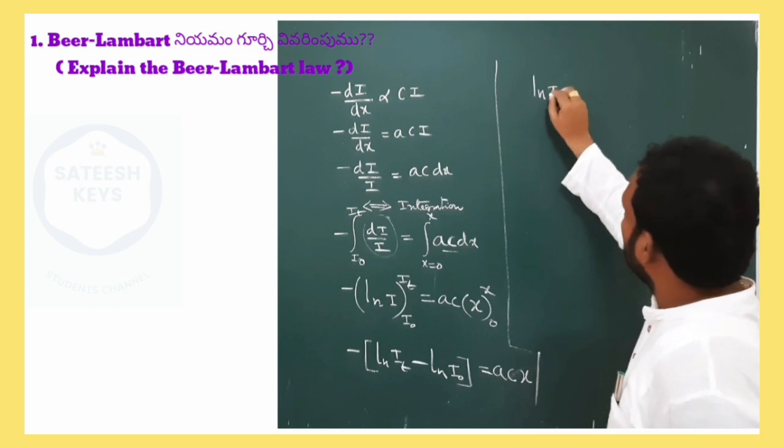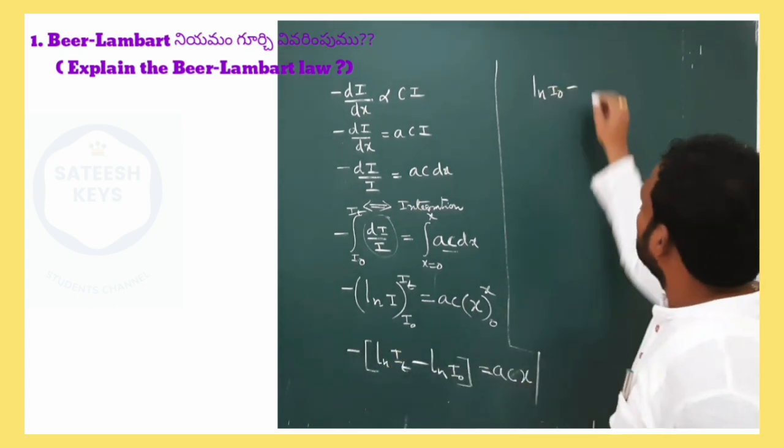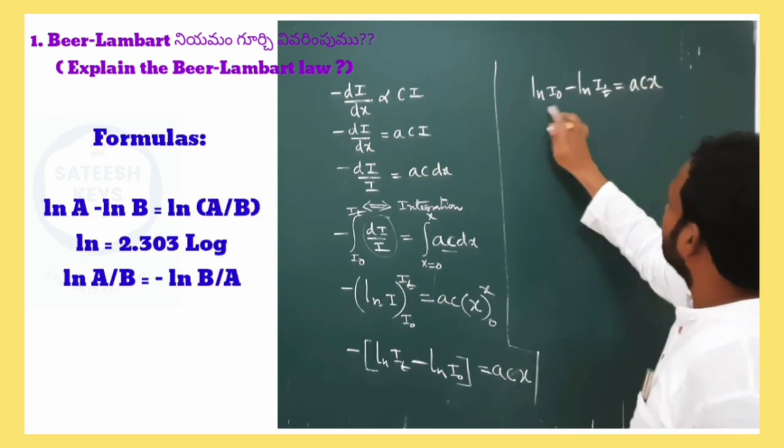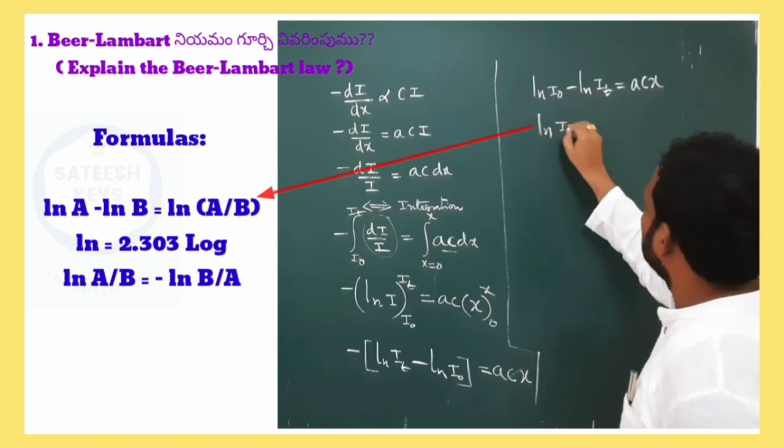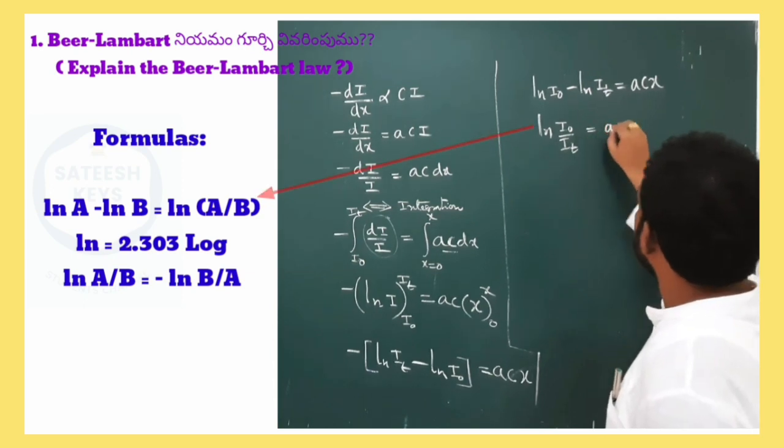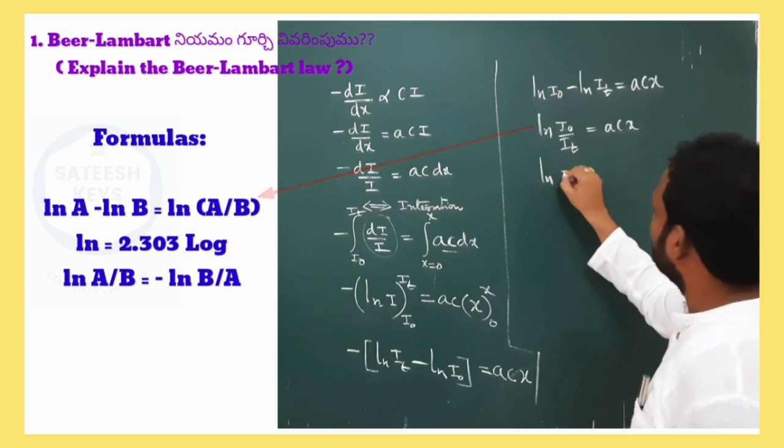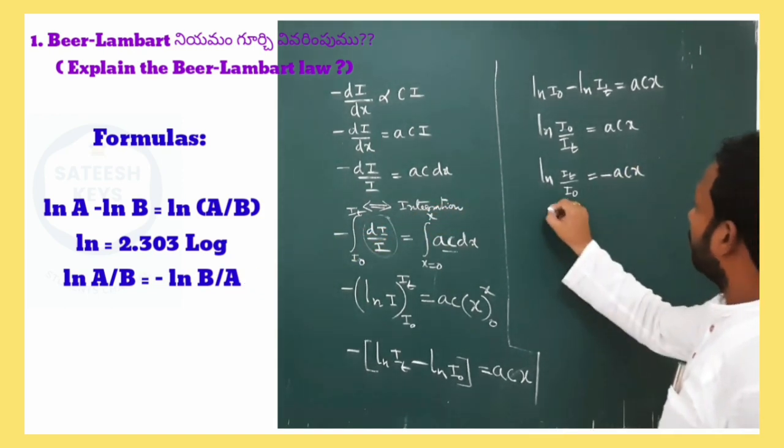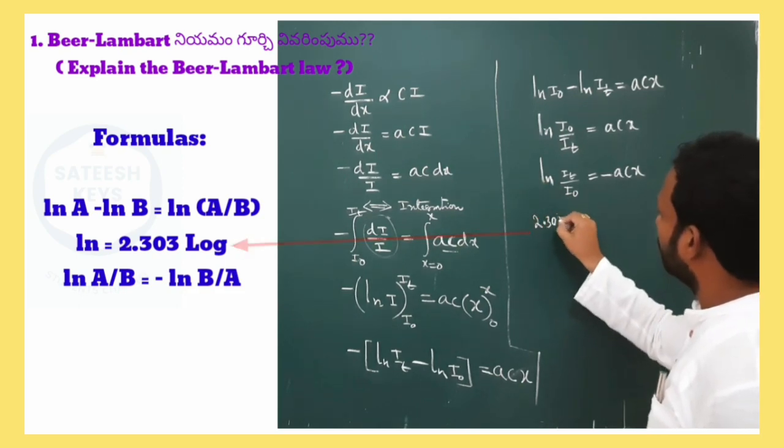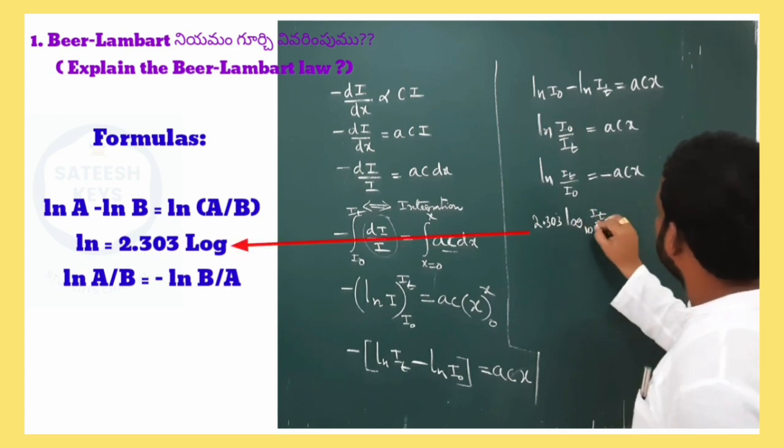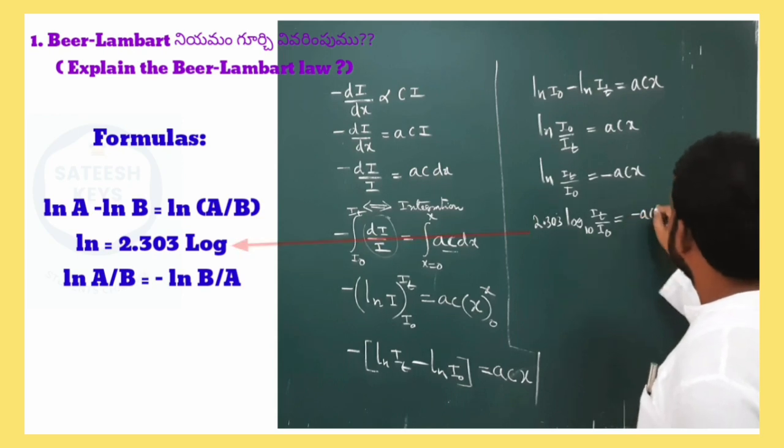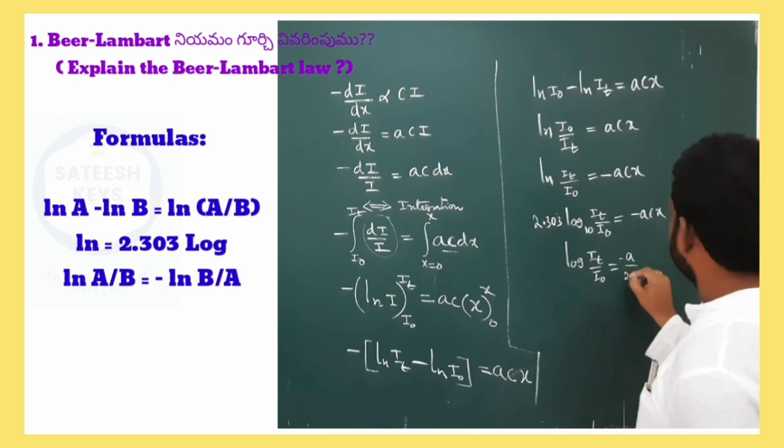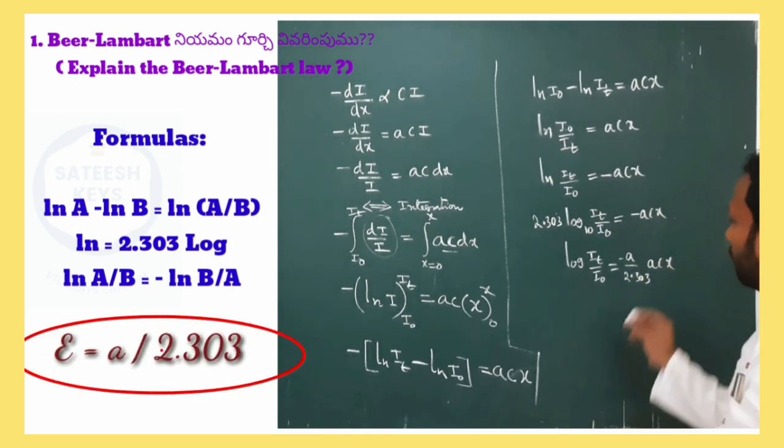Multiplying with minus: ln i naught minus ln it equal to acx. Here a is the proportionality constant, c is the concentration of the solution, x is the thickness. So ln i naught by it equal to acx. Therefore ln it by i naught equal to minus acx. Converting: 2.303 log10 it by i naught, here ln equals 2.303 log10, is equal to minus acx. So log it by i naught is equal to minus a by 2.303 times cx. This equals epsilon.